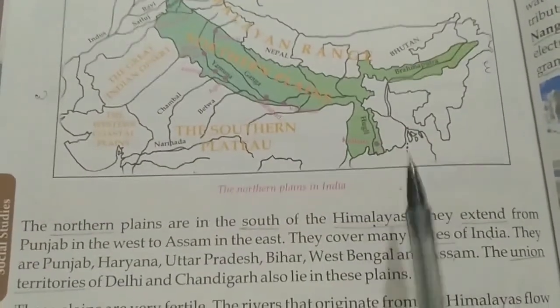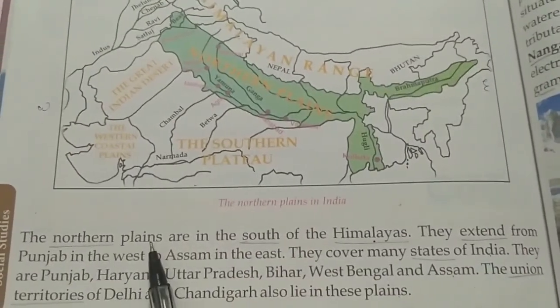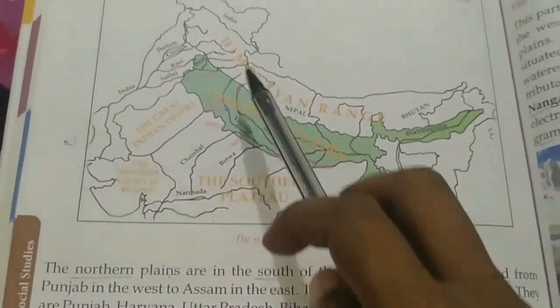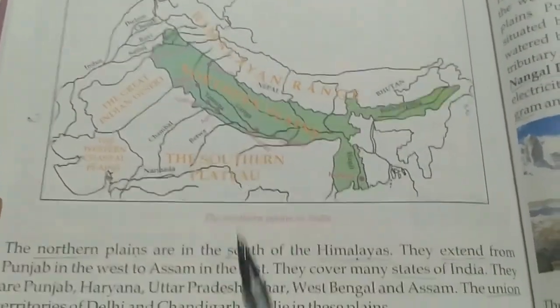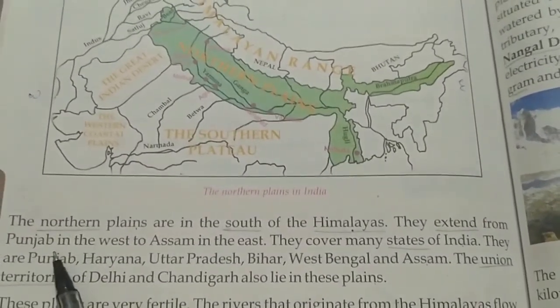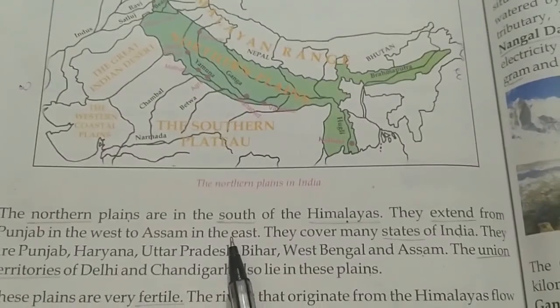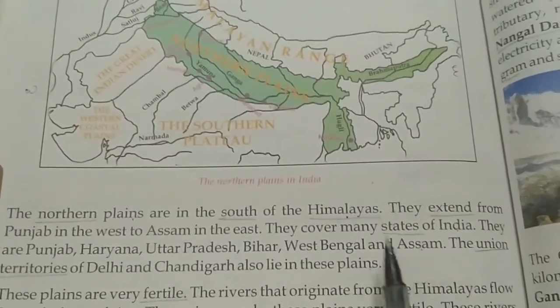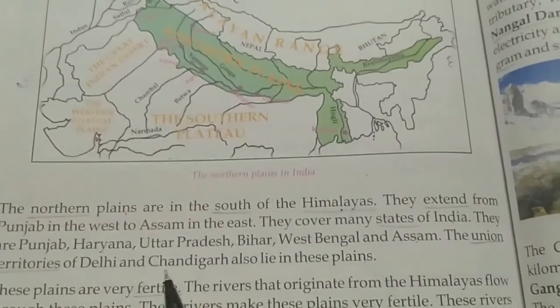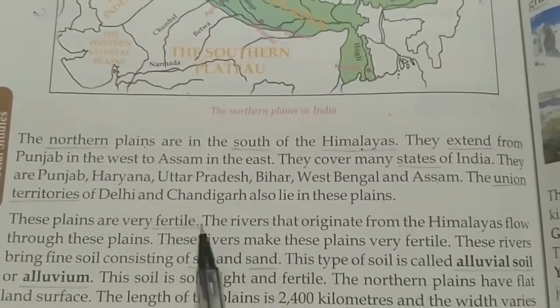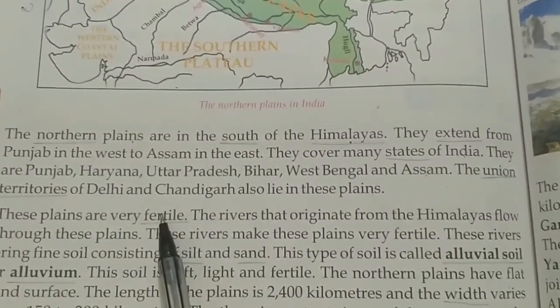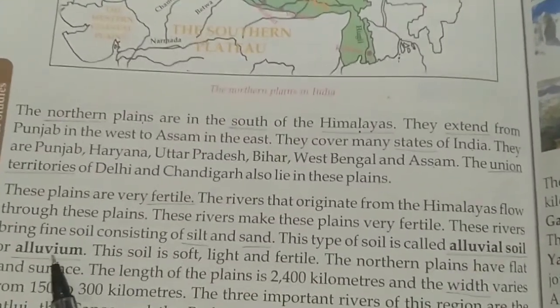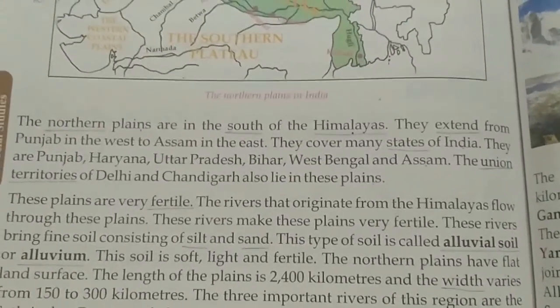In the previous class we studied what the Northern Plains are. Northern Plains are in the south of the Himalayas. They extend from Punjab in the west to Assam in the east and cover many states: Punjab, Haryana, Uttar Pradesh, Bihar, West Bengal and Assam. The Union Territories of Delhi and Chandigarh also lie in these plains. These plains are very fertile and the type of soil found here is called Alluvial Soil or Alluvium — that we studied in our previous class.